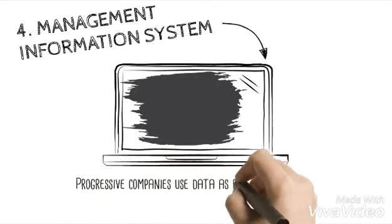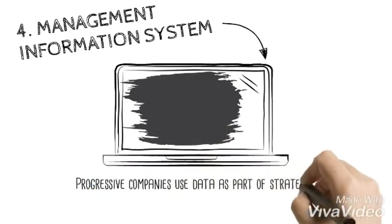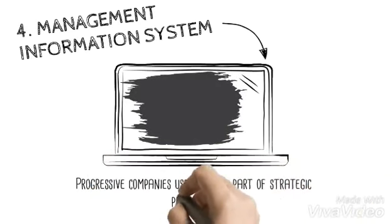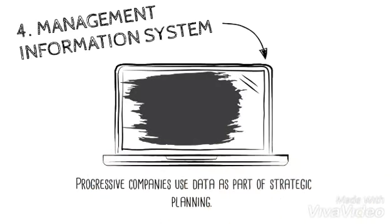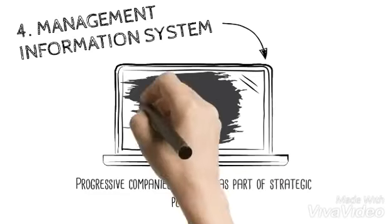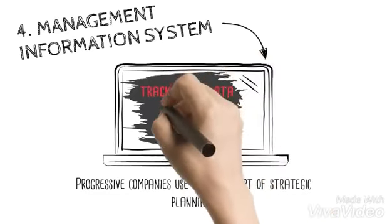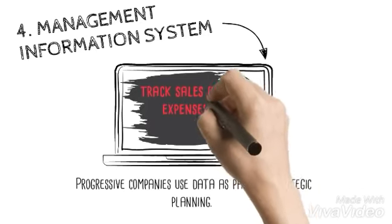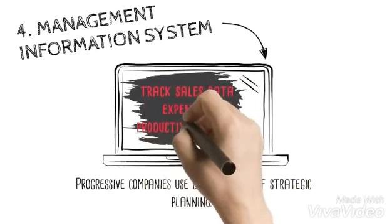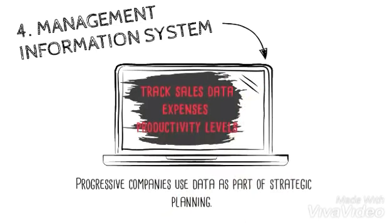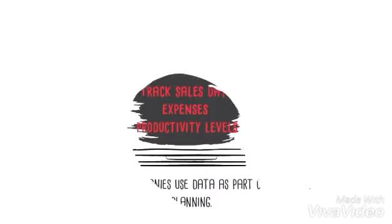Progressive companies use data as part of their strategic planning as well as the tactical execution of strategy. Management information systems enable companies to track sales data and productivity levels, track profitability over time, and identify areas of improvement.